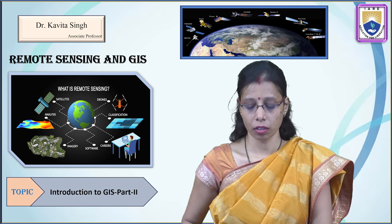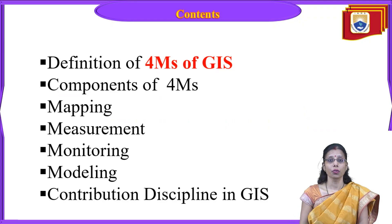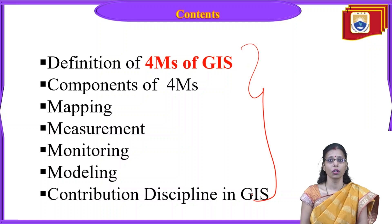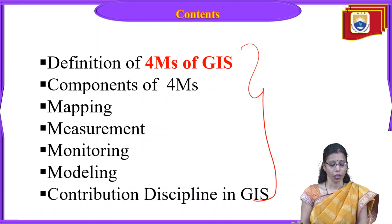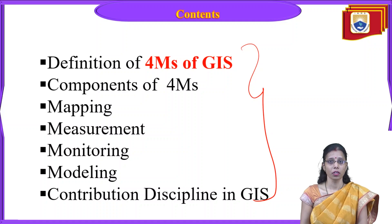Let us start with the contents. What we have here is: the definition of the 4Ms of GIS, what the 4Ms are, and the components of 4Ms — mapping, measurement, monitoring, and modeling — as well as the contributing disciplines in GIS. This all will be included in the introduction part.